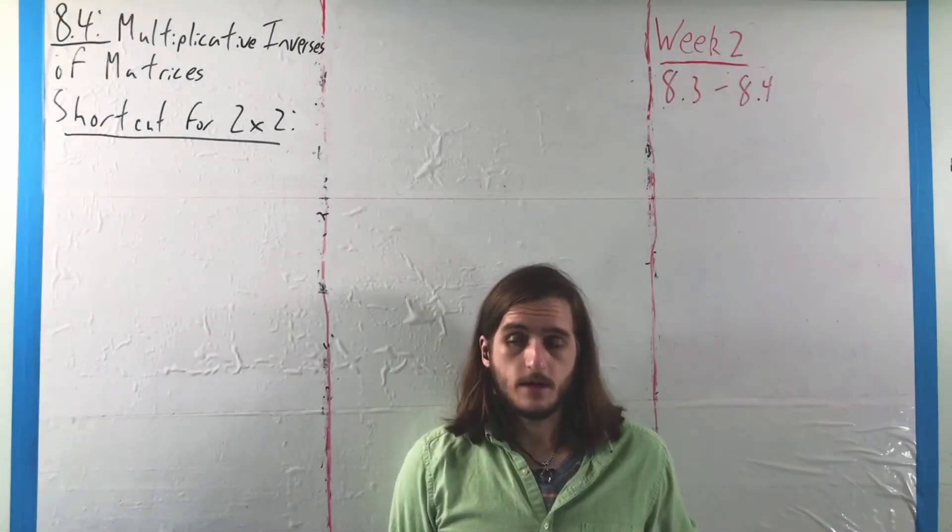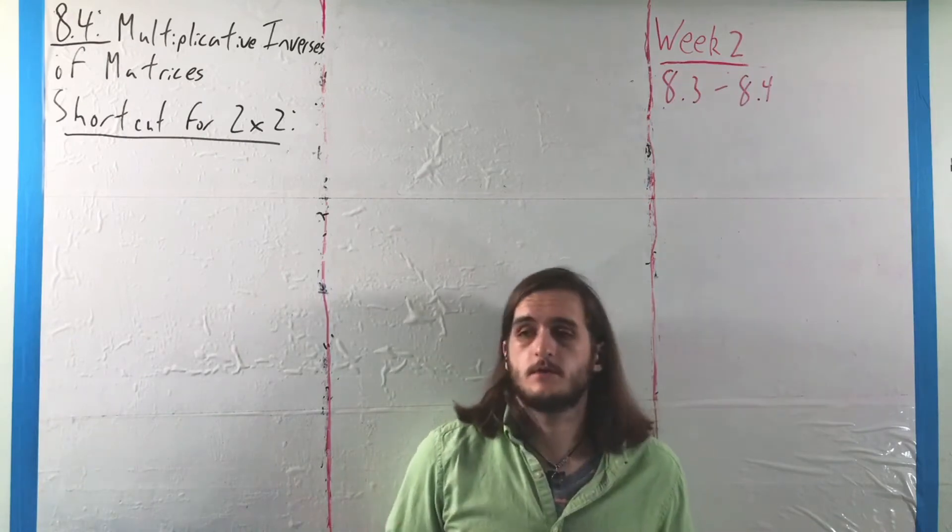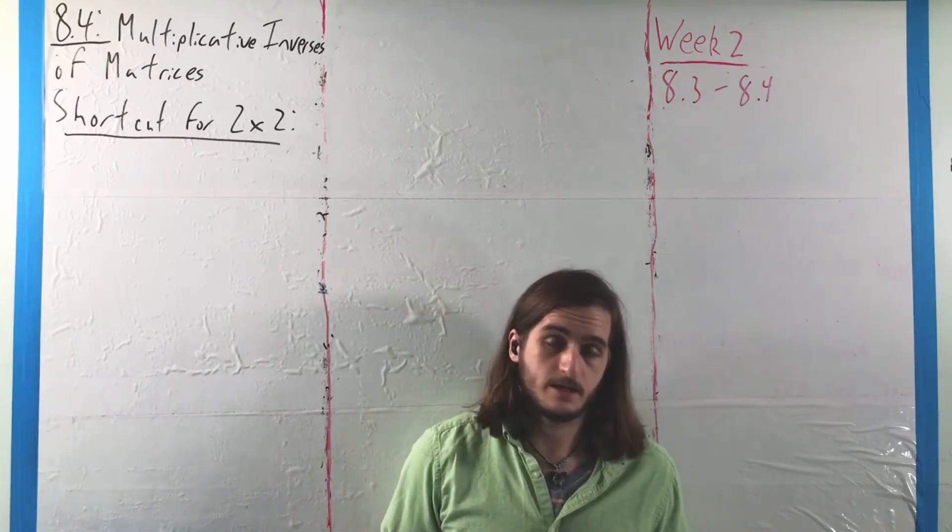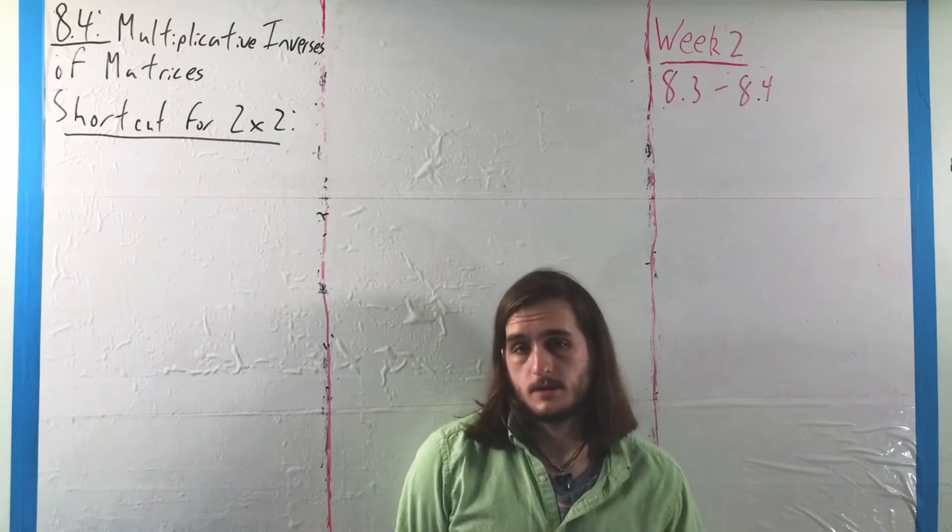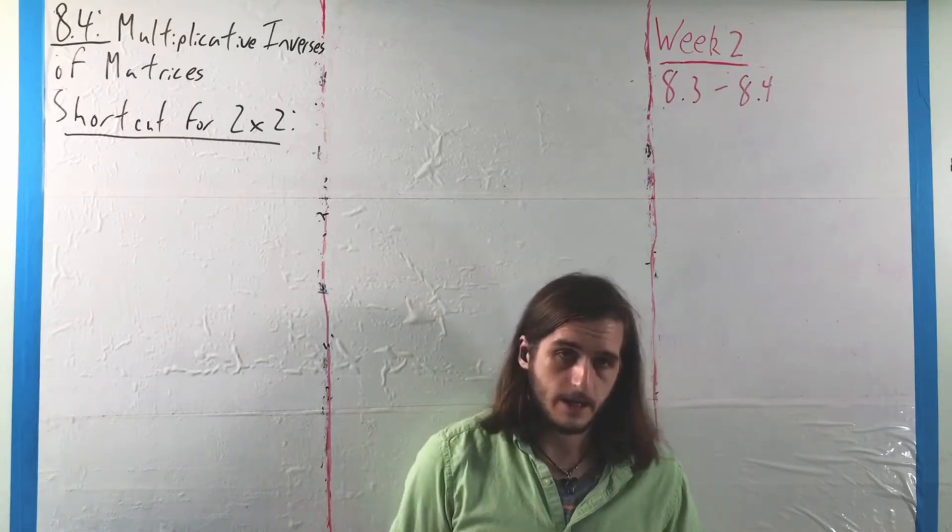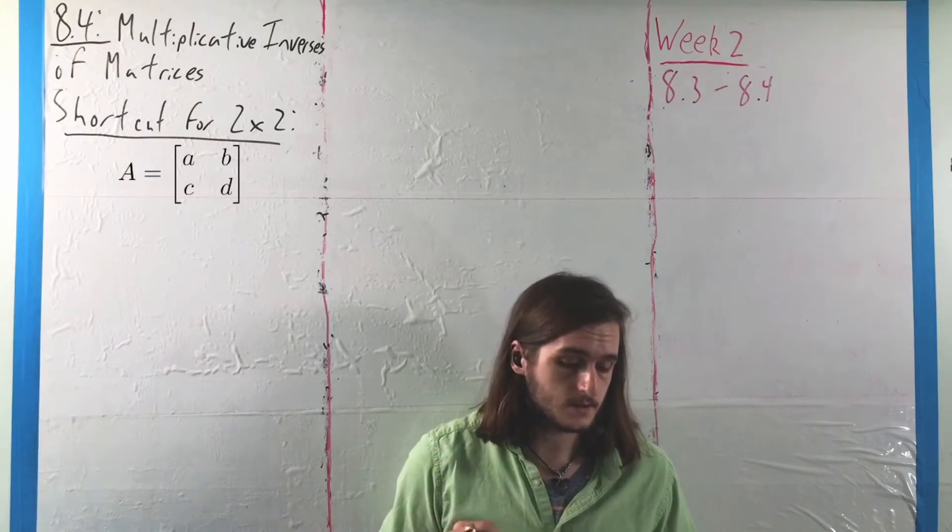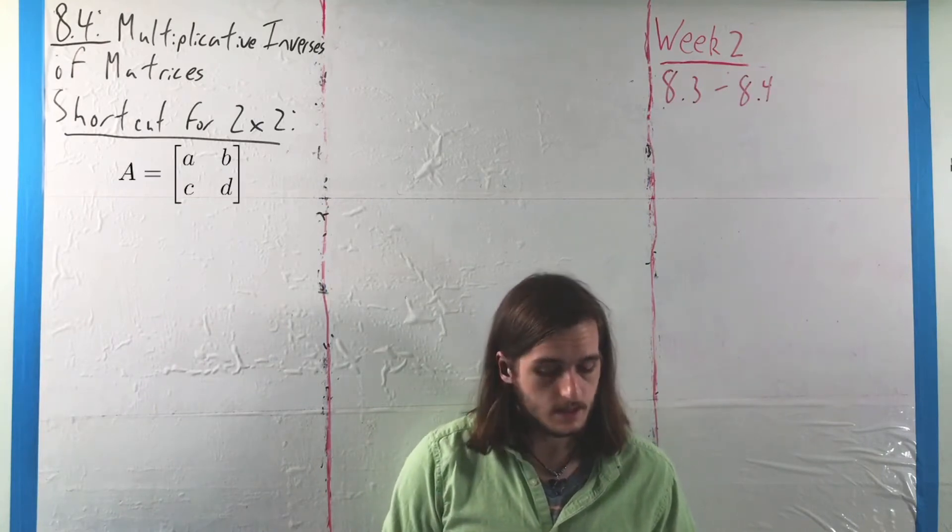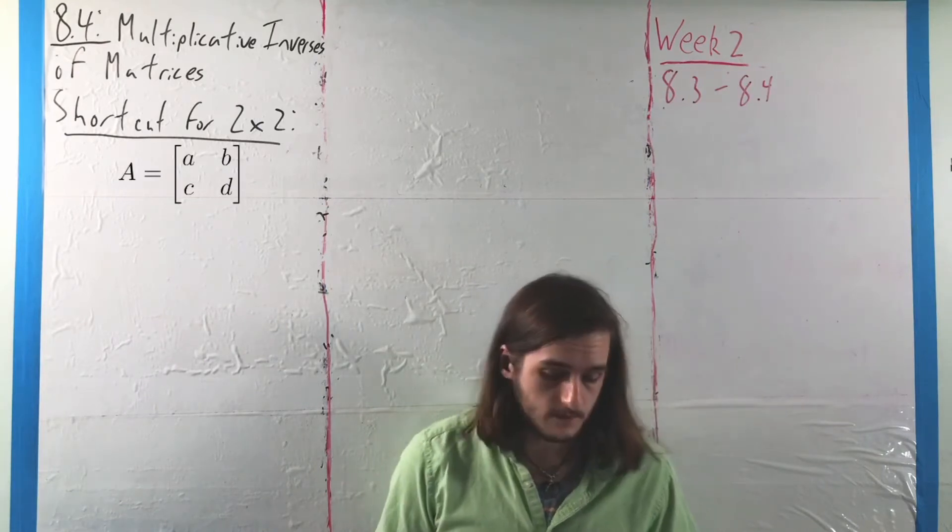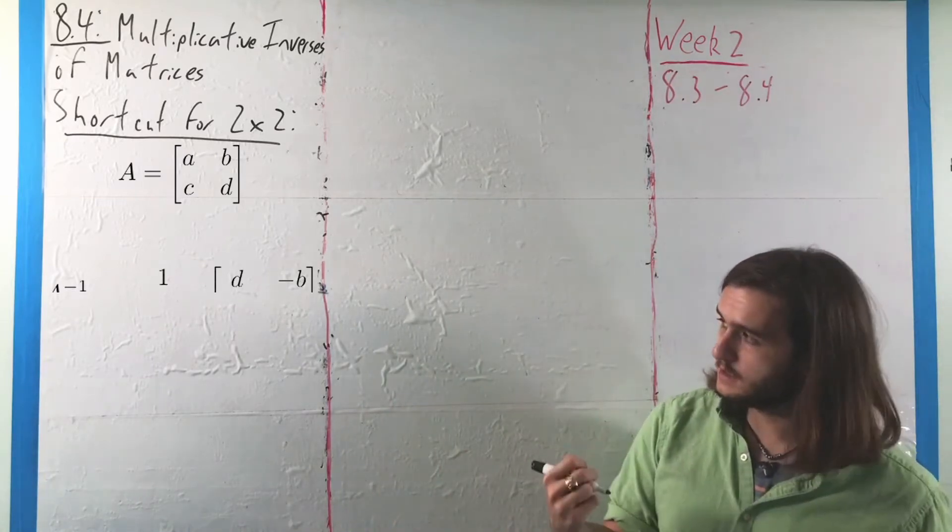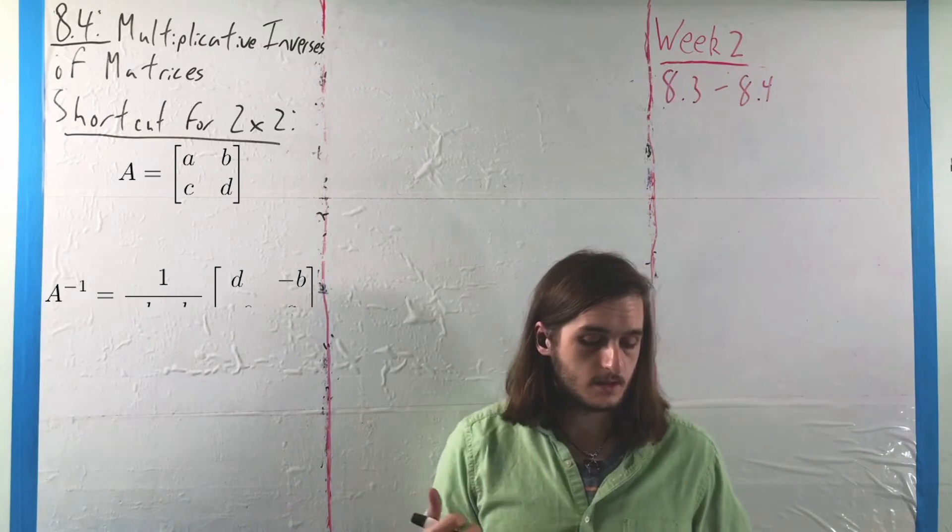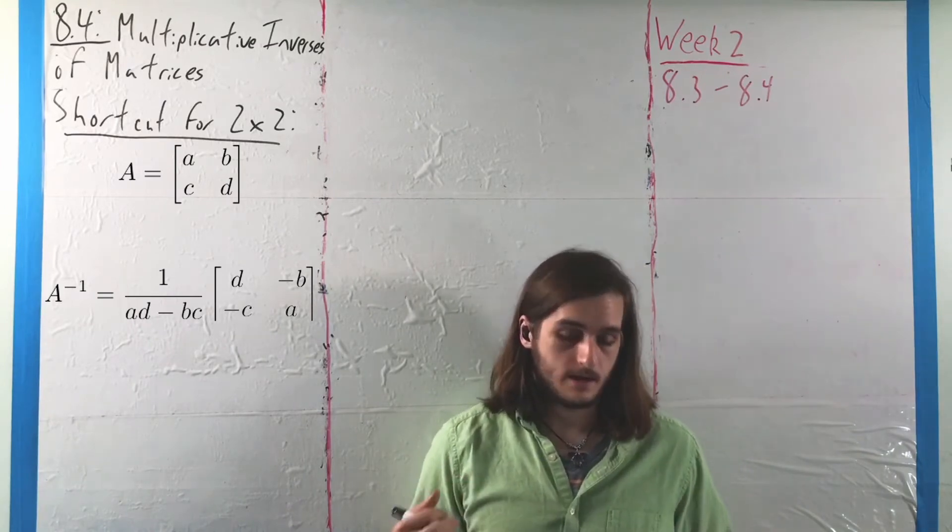So for the 2x2 case, getting the inverse actually follows a nice pattern. Again, 2x2 matrices tend to be relatively nice for multiplication. In fact, if we need the inverse of some matrix ABCD, we will have that it takes the form 1 over AD minus BC times the matrix D, negative B, negative C, A.